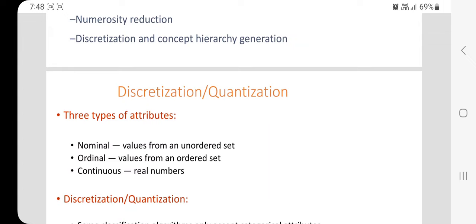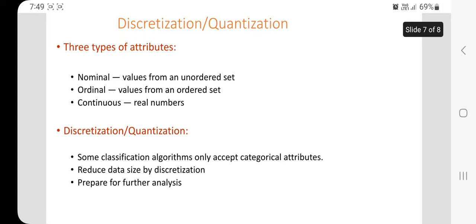Next is discretization, also called quantization. Discretization is especially important for numerical data. There are three types of attributes: nominal, ordinal, and continuous. Nominal data means values are taken from an unordered set. Ordinal means values come from an ordered set — for example, grades A, B, C, D, and F. Continuous data is real numbers, where any real number value can be taken.